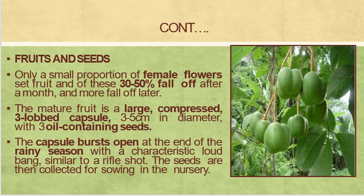Regarding fruit and seed structure, only a small proportion of female flowers set fruit, and of these 30 to 50% fall off after a month and more fall off later. The mature fruit is a large trilocular capsule, 3 to 5 cm in diameter, with three oil-containing seeds. The capsule bursts open at the end of the rainy season with a characteristic loud bang similar to a rifle shot. The seeds are then collected for sowing in the nursery.